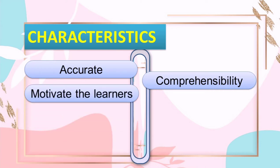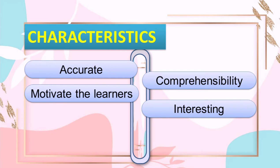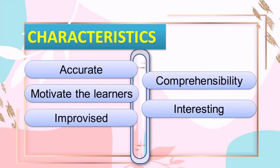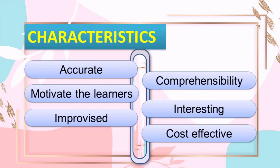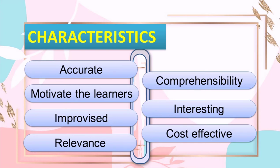The third characteristic is to motivate the learners by adding pictures, videos, charts, maps, etc. The fourth one is it should be interesting — it is a main job of a teacher to create interest in students for learning. The topic can be made interesting with the help of charts, models, films, picture videos, etc. The fifth one is it should be improvised and cost effective, so it should produce a good result in relation to the effort given. And of course it should be relevant.